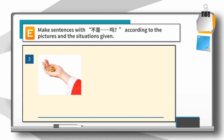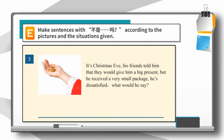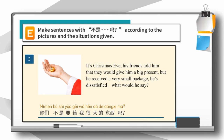3. It is Christmas Eve. His friends told him they would give him a big present, but he received a very small package. He is dissatisfied. What would he say? 你们不是要给我很大的东西吗？Well done!